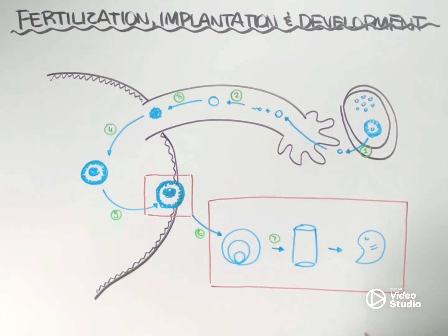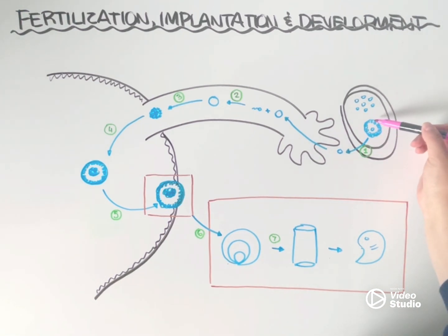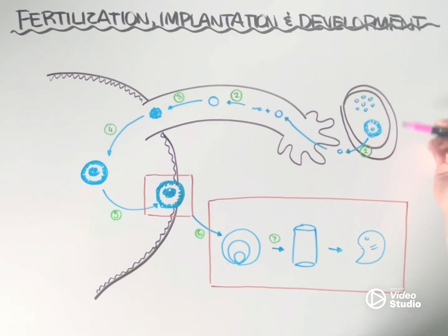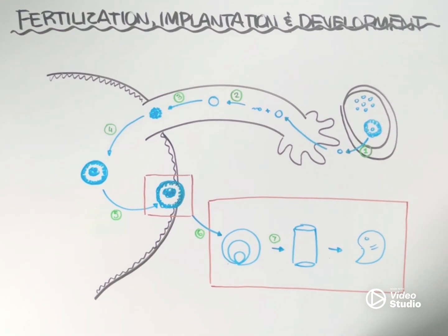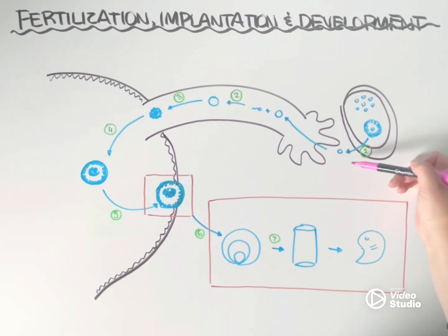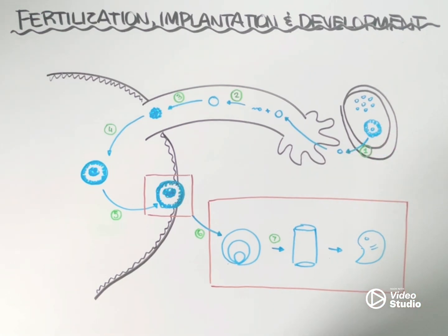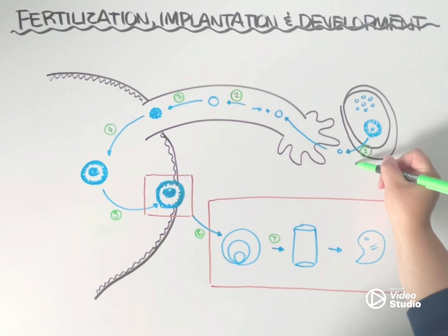During part of the menstrual cycle, hormones are secreted that allow for the development of a follicle inside the ovaries, and then within that follicle you're going to see the maturation of a single egg. Eventually, additional hormonal changes will cause the egg to burst from the follicle and be released from the ovaries. This step is known as ovulation.